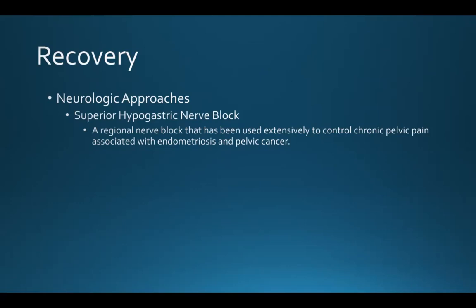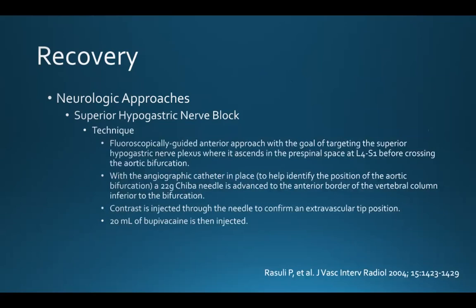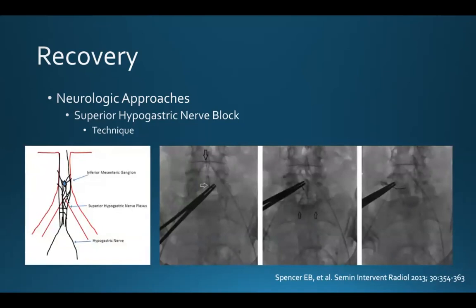It is possible to block the transmission in this nerve using a regional nerve block, which has been used extensively to control chronic pelvic pain associated with endometriosis and pelvic cancer. Under fluoroscopic guidance during the UFE procedure, we use an anterior approach targeting the superior hypogastric nerve plexus where it ascends in the pre-spinal space at L4-S1 before crossing the level of the aortic bifurcation. With the angiographic catheter in place to help identify the position of the aortic bifurcation, a 22-gauge Chiba needle is advanced to the anterior border of the vertebral column just inferior to the bifurcation. Contrast is injected through the needle to confirm a non-intravascular tip position, and then 20 cc's of bupivacaine can be injected.